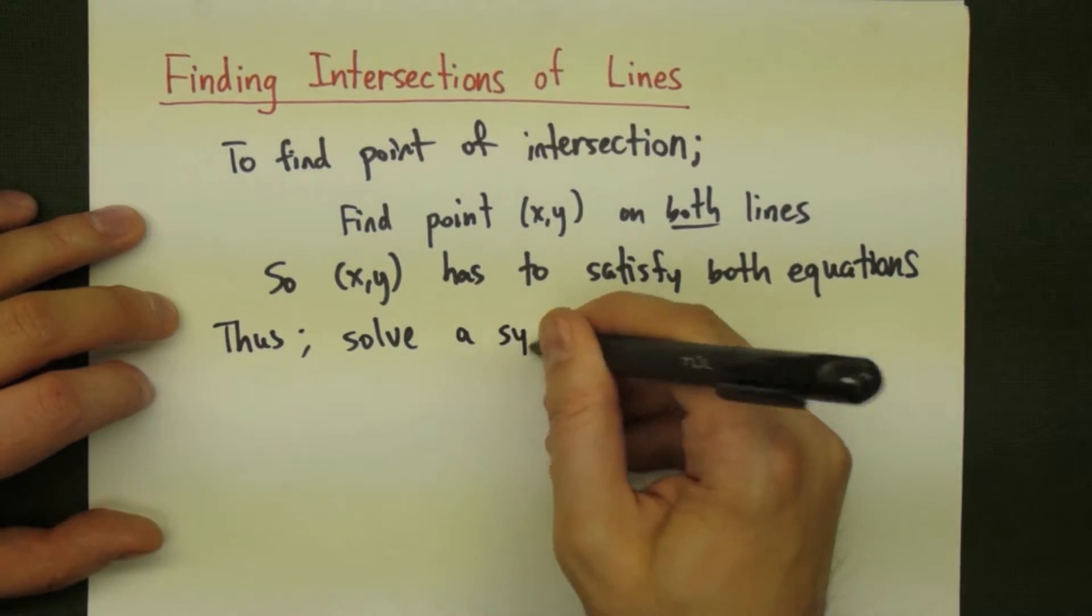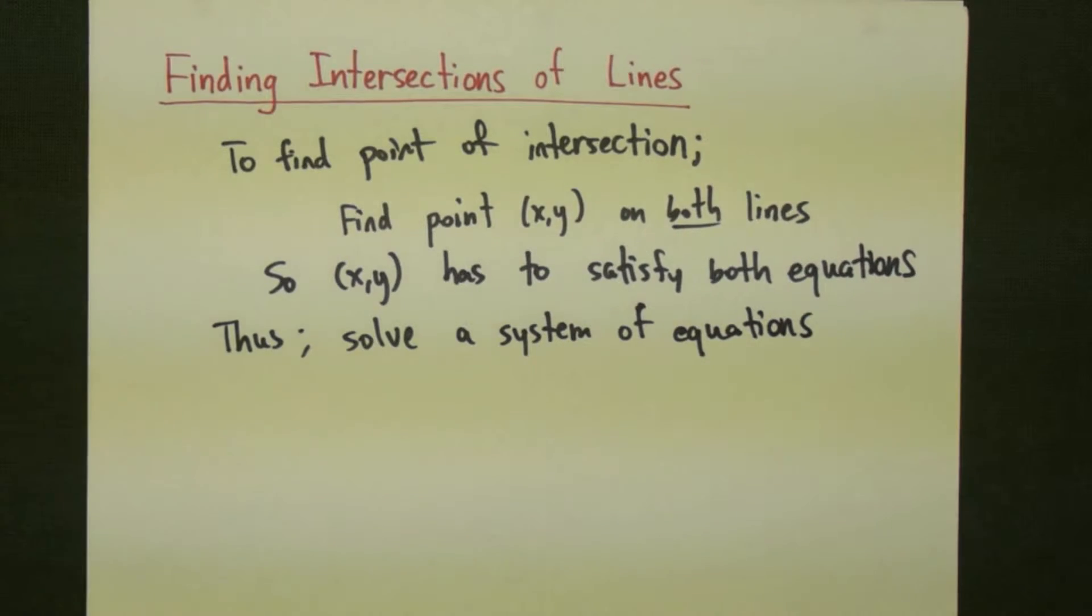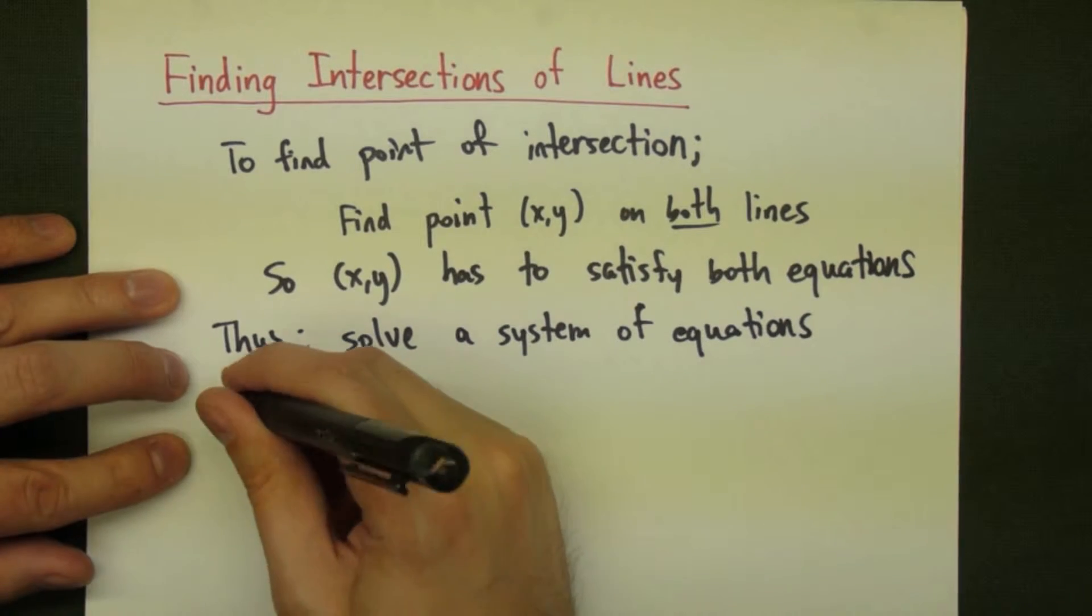So if it has to satisfy both lines, we are going to find an x and y that solves a system of equations, the two equations that make up both of the lines.